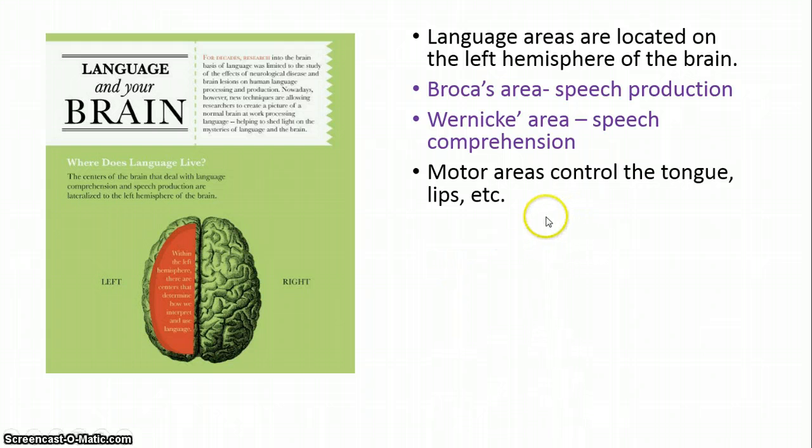The motor areas or the motor cortex, as we said before, controls the tongue, the lips, etc. And so on this little diagram here, the question is asked, where does language live? And so we want to identify this area of the brain as the areas responsible for our language development.